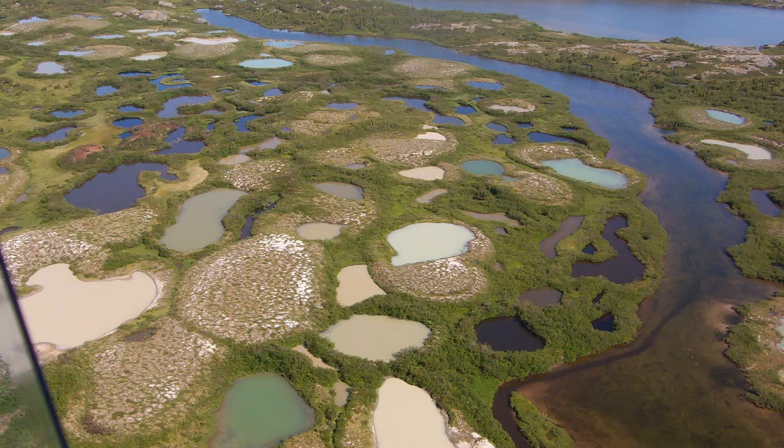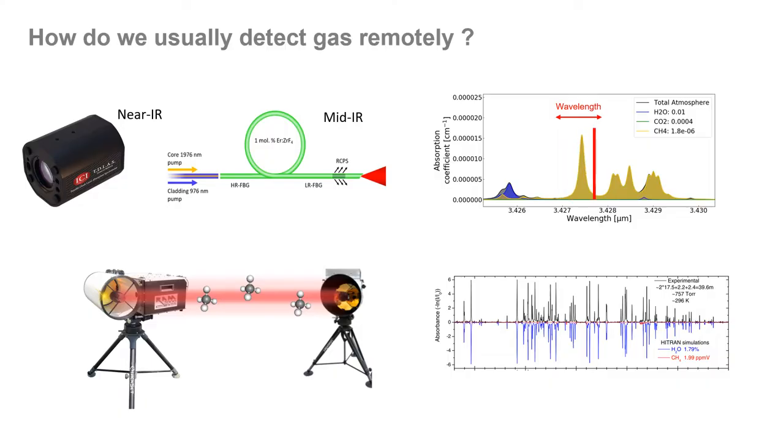But how does gas remote sensing typically work in the first place? Usually, gas remote sensing is achieved either with a tunable narrow wavelength laser, or by measuring the absorption spectrum using a broadband light source. In the first scenario, the laser's wavelength is chosen to match a selected absorption line of a target gas, and then sweep the laser wavelength in and out of it. By calculating the difference in power between the two positions, the concentration of the gas can be deduced.